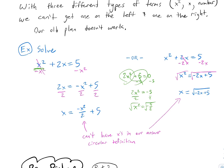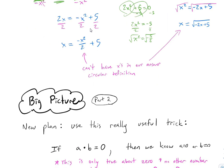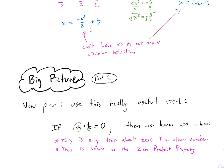But when there's x squareds, x's, and numbers, you can't use the old plan. So we come up with a new plan, using a really interesting property: if two things multiplied together equal 0, the only way that's possible is if one of them is 0. You can't have one-half times 3 equal 0, or negative 8 times 57 equal 0. So we know either a is 0 or b is 0.